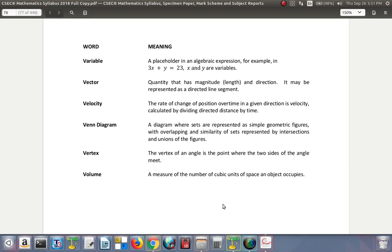Vector: a quantity that has magnitude (length) and direction. It may be represented as a directed line segment. In that case, an arrow on the line would show the direction, and the length of the line can be used to show the magnitude using a certain scale.